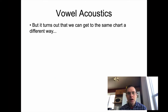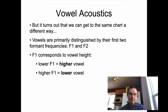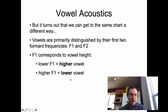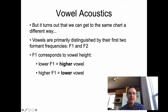It turns out you can get to the same chart a different way. Vowels are primarily distinguished by their first two formant frequencies — F1 and F2 — which represent resonances of the vocal tract. F1 corresponds to vowel height, but inversely: a lower F1 means a higher vowel, and a higher F1 means a lower vowel. So a low F1, like I saw for E and OO, corresponds to a high vowel. And a high F1, like for AH, means the tongue is actually in a low position. We're not going to worry anymore about tongue position — we get better information from the acoustics.